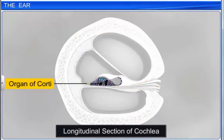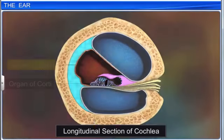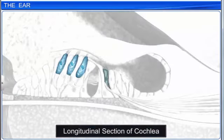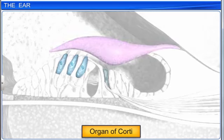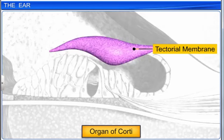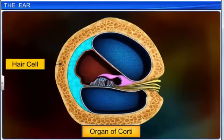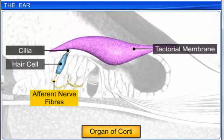The organ of Corti, located in the scala media, is the actual receptor of sound. It is composed of hair cells that act as auditory receptors. Above the row of hair cells lies a thin elastic membrane called the tectorial membrane. Each hair cell has cilia on an apical part, which are in contact with the tectorial membrane, whose basal end is in contact with afferent nerve fibers.